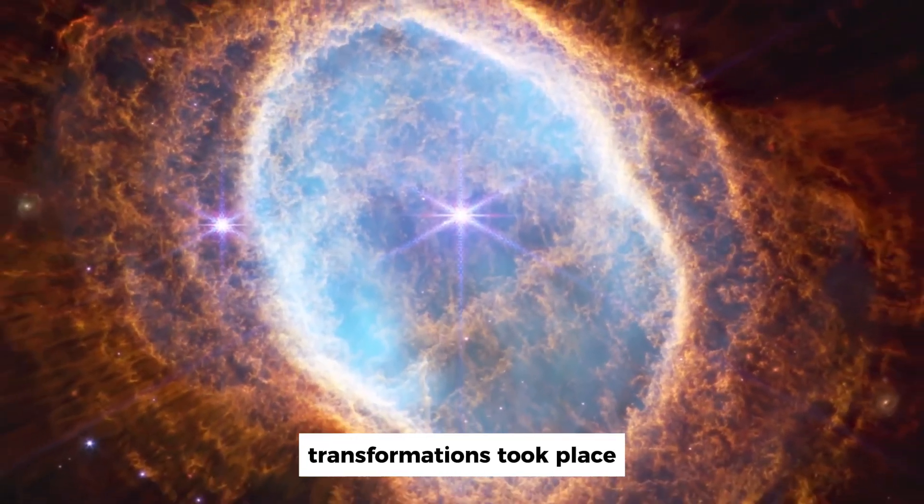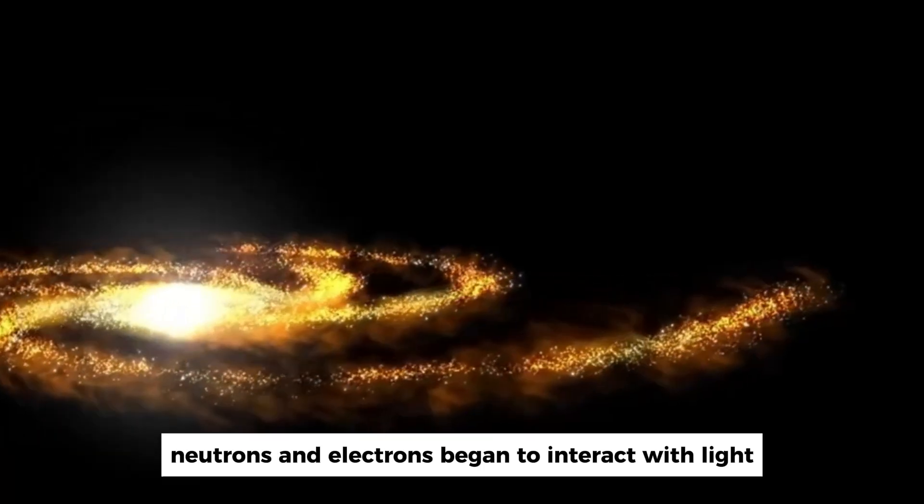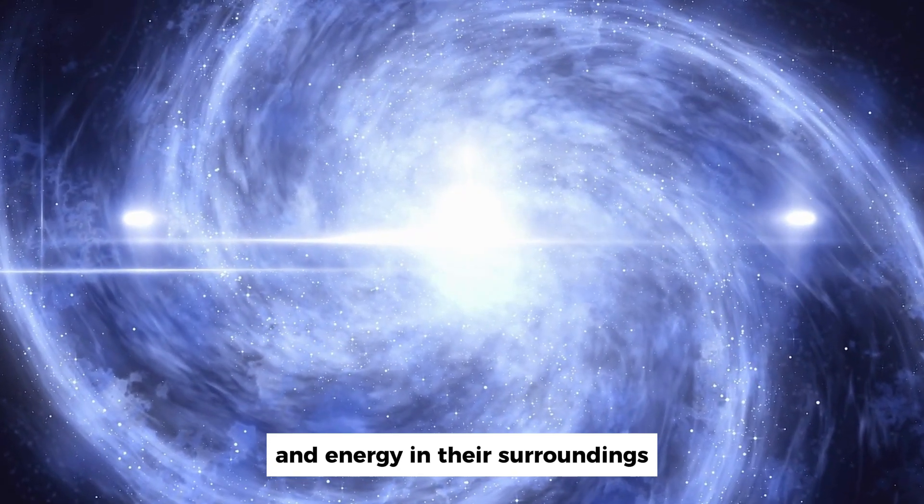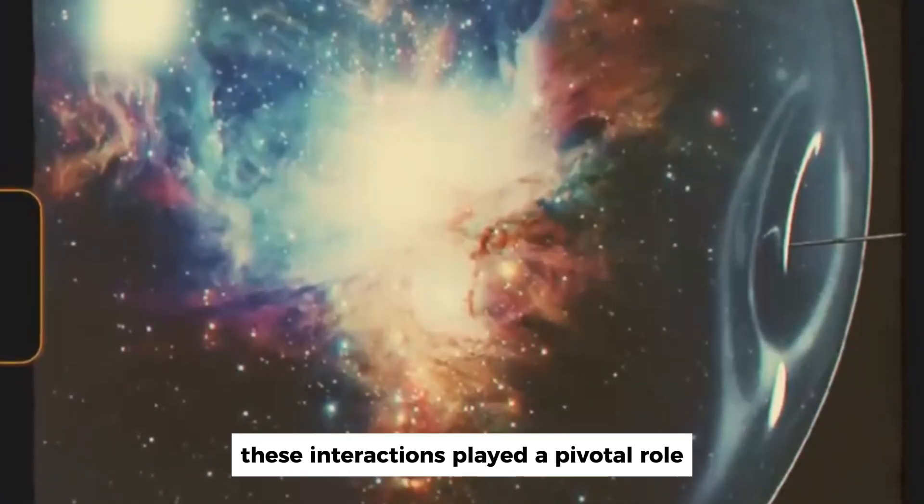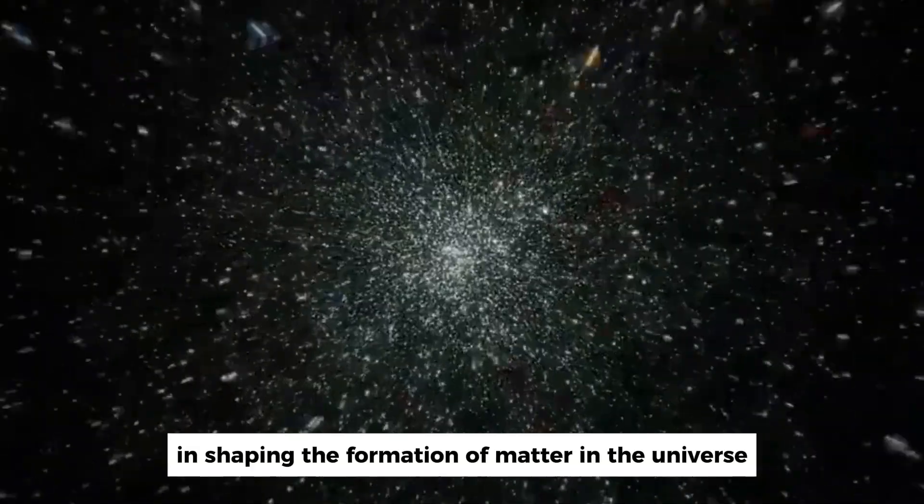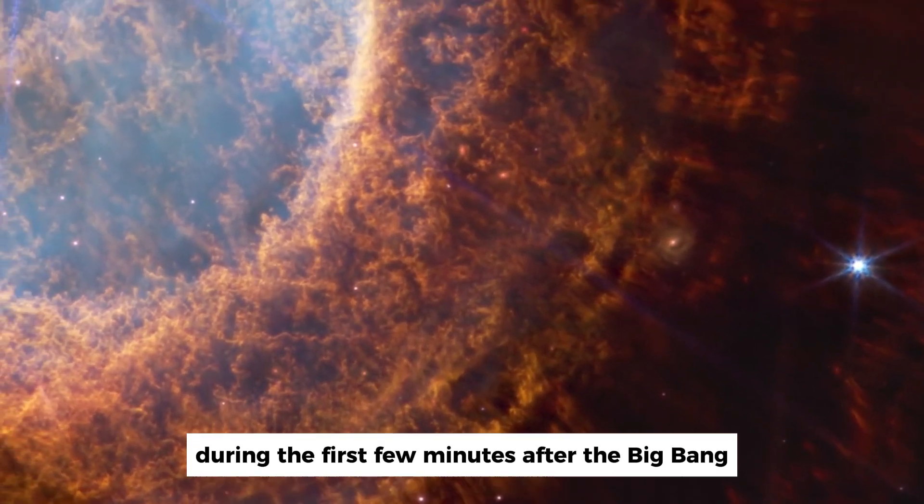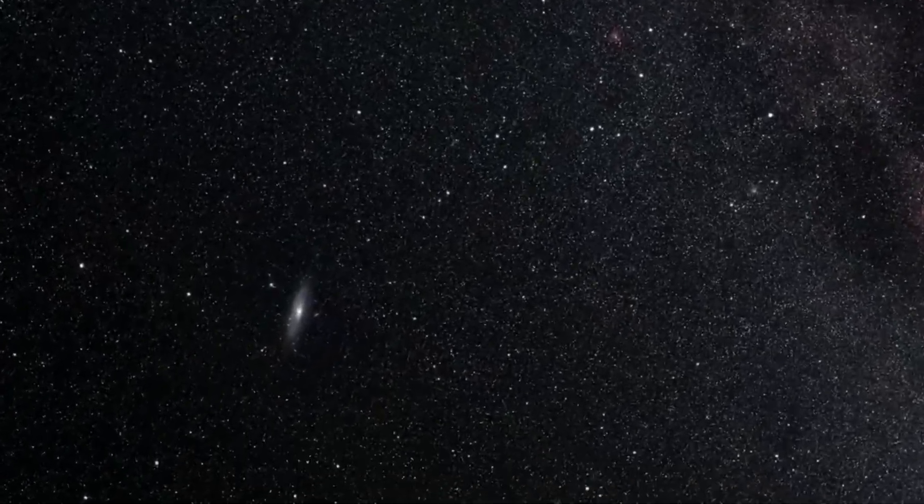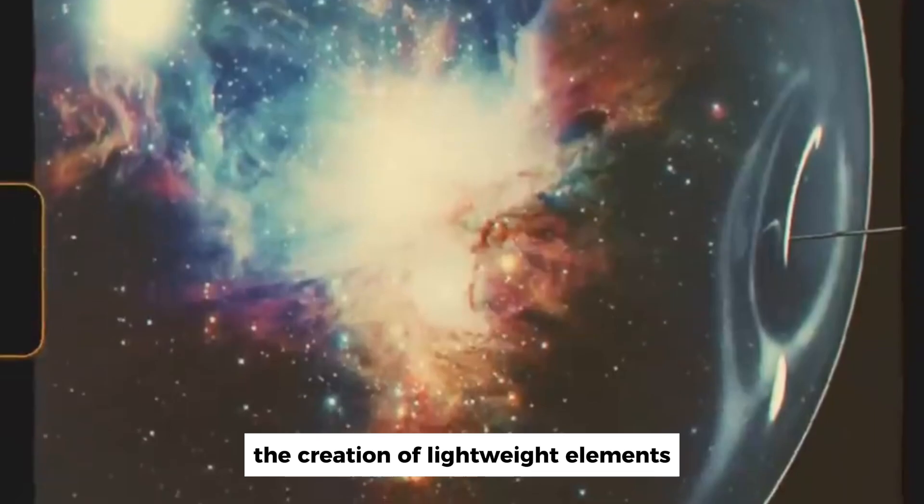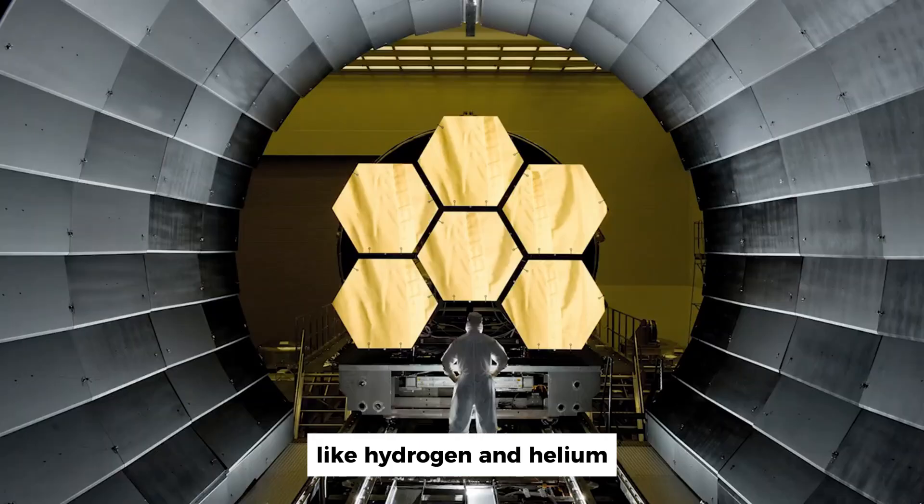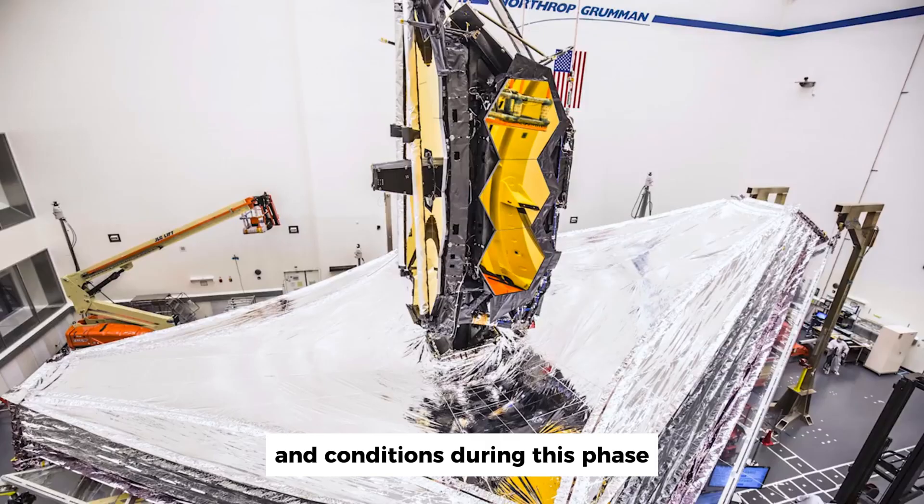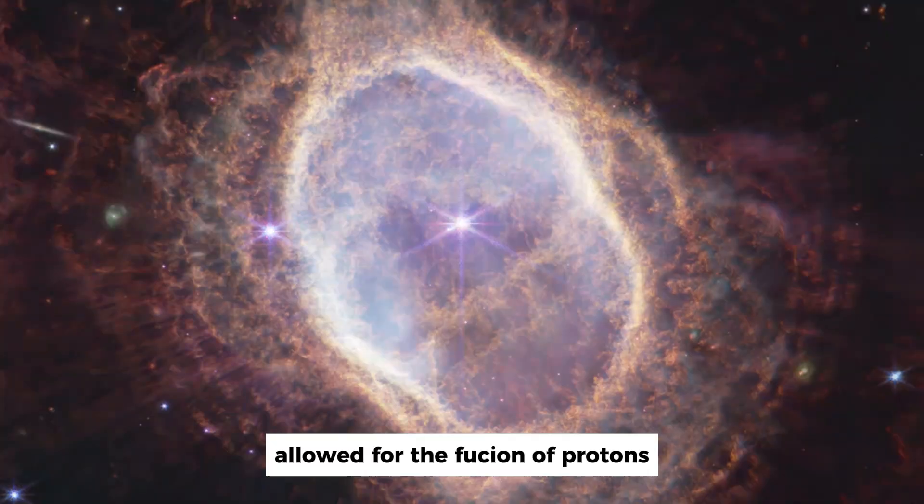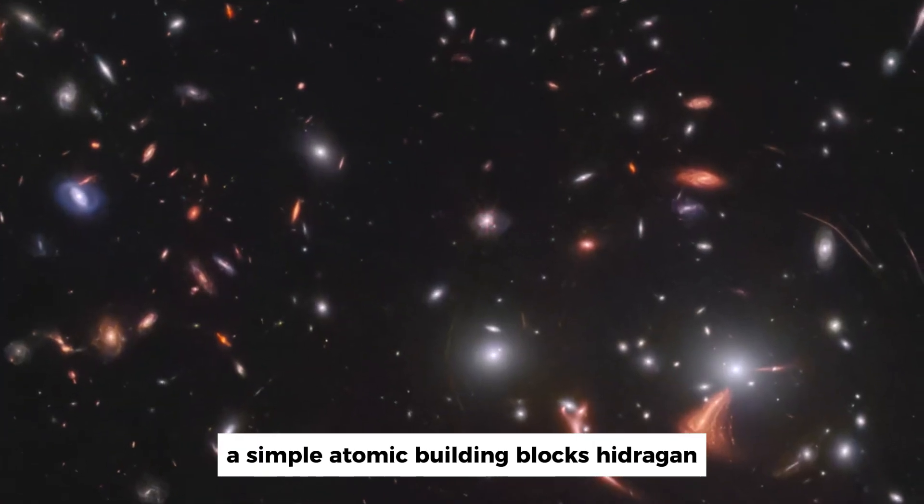As the universe expanded and cooled down, transformations took place. Particles such as protons, neutrons, and electrons began to interact with light and energy in their surroundings. These interactions played a pivotal role in shaping the formation of matter in the universe. During the first few minutes after the Big Bang, there was a process called nucleosynthesis. This process involved the creation of lightweight elements like hydrogen and helium.